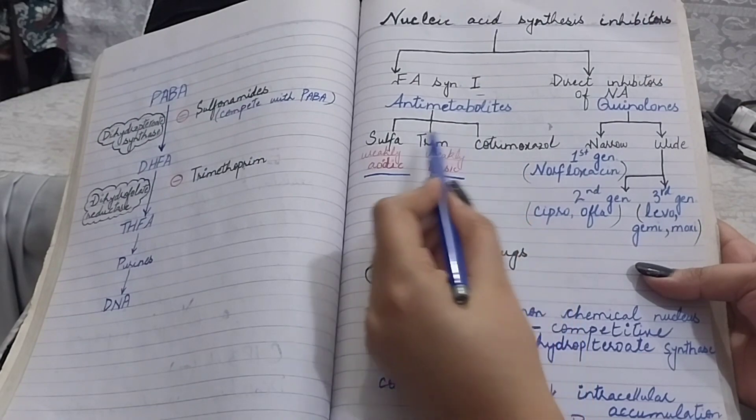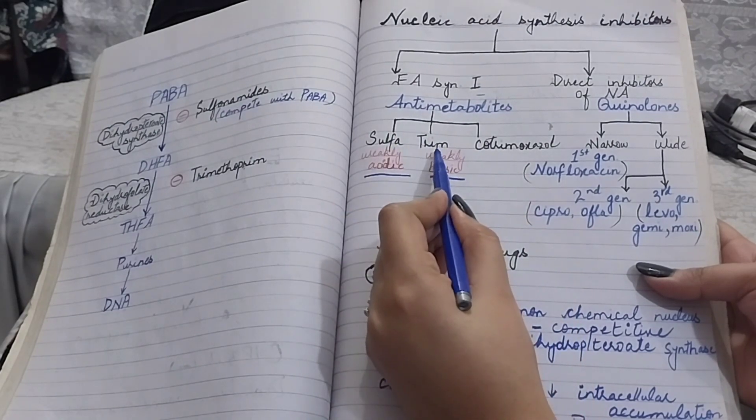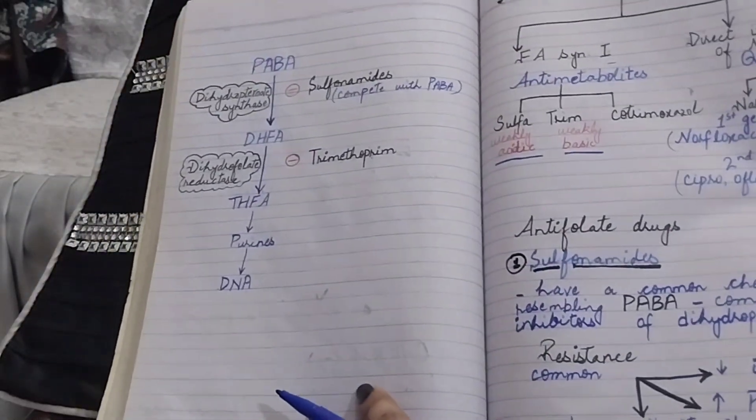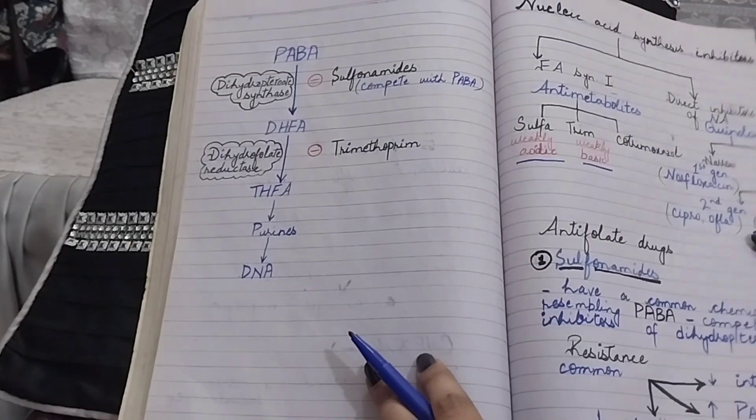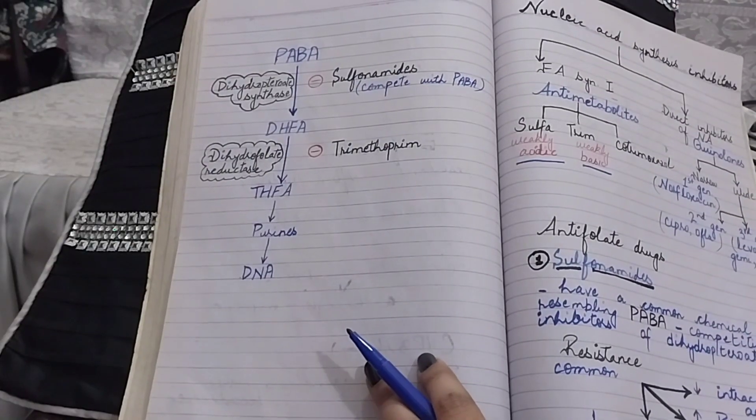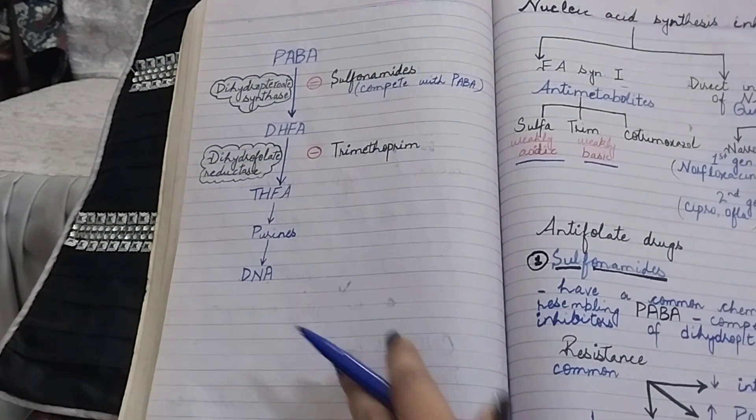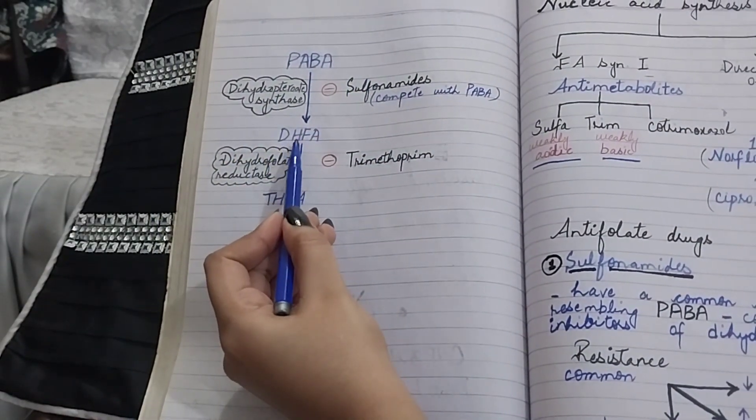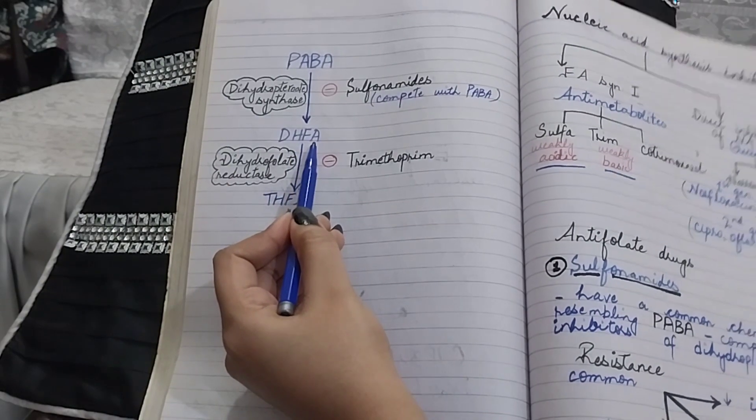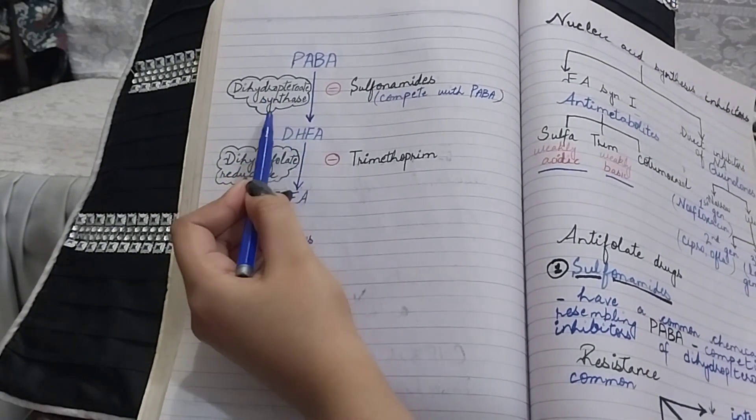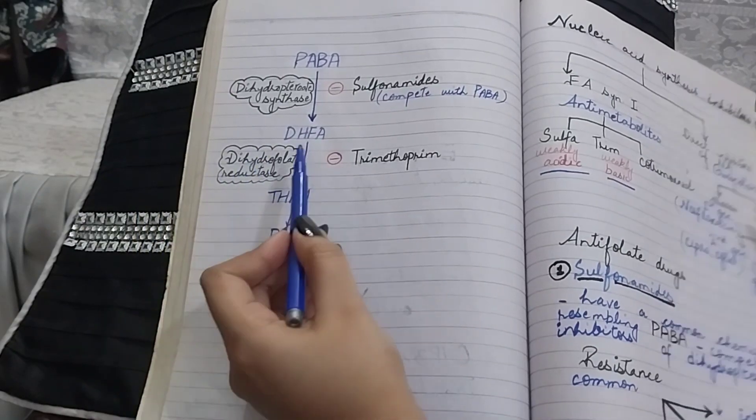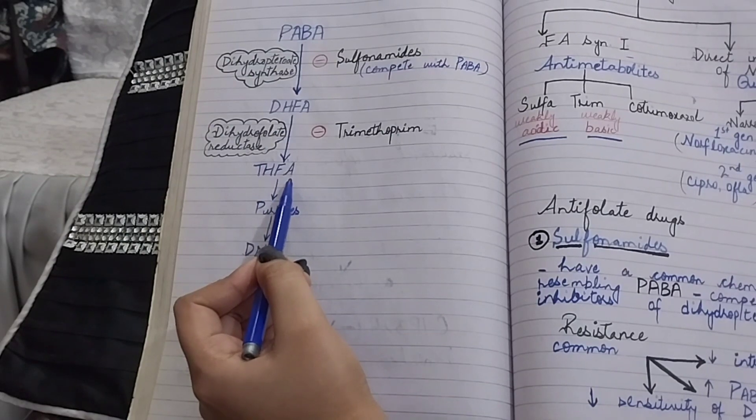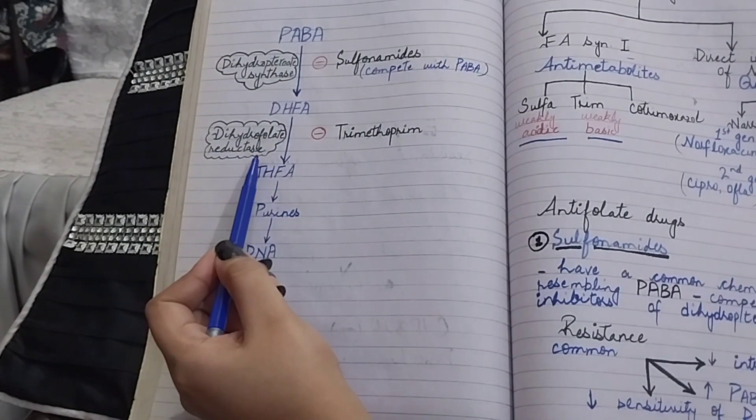Cotrimoxazole is a combination of sulfamethoxazole and trimethoprim. Before going into detail, let's see how PABA is involved in DNA formation. PABA is converted into dihydrofolic acid by the enzyme dihydropteroate synthase, and then this dihydrofolic acid is converted into tetrahydrofolic acid by the enzyme dihydrofolate reductase.